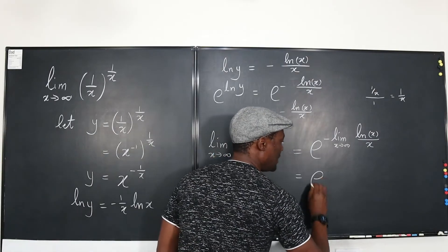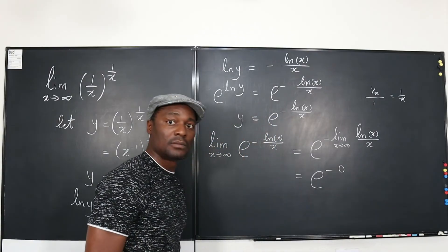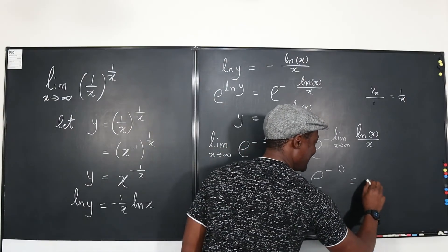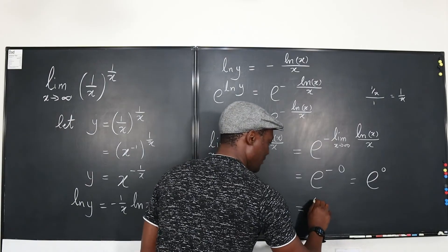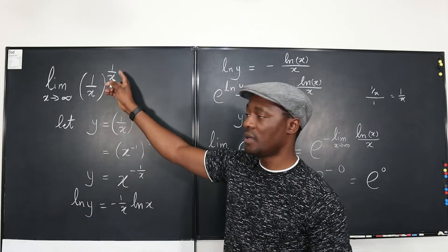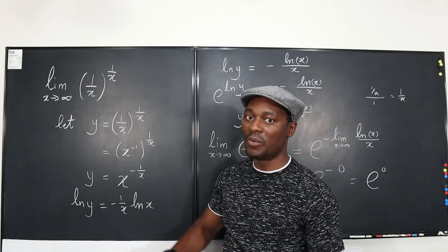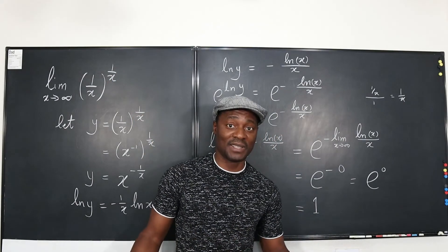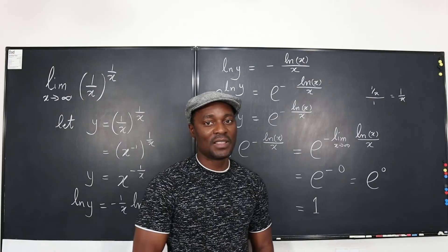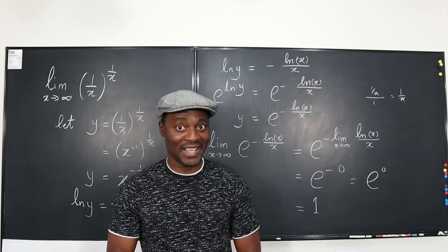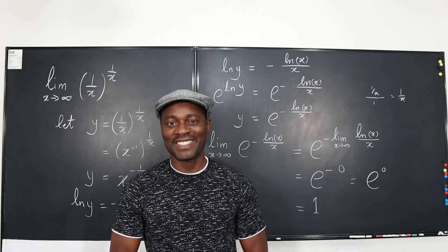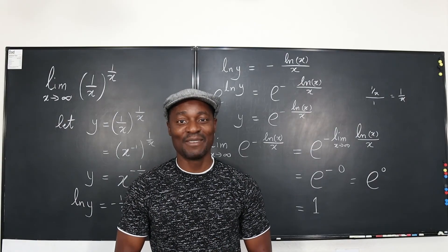So we have e to the negative of that limit, which is zero. Negative zero is just zero, so this equals e to the zero. Anything raised to the power zero is 1 — that's our answer. Note: by intuition, zero raised to zero doesn't give 1, but the algebra shows us e^0 = 1. Check it on a graph: the graph approaches 1 as you go toward infinity. I'll see you in the next video — don't stop learning, because those who stop learning have stopped living. Bye!